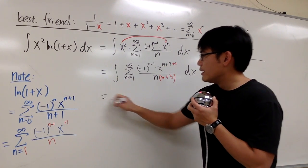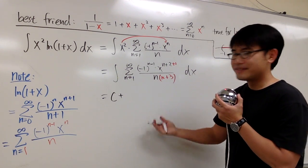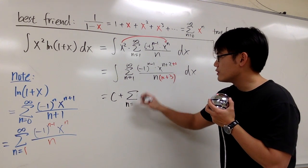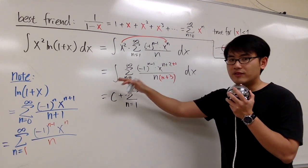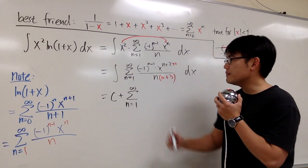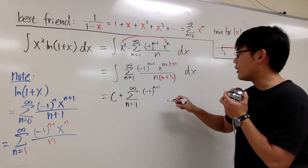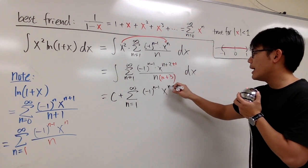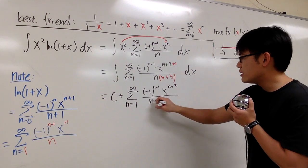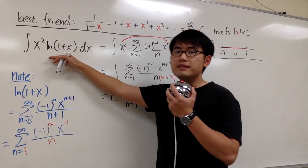Remember we always have the plus c whenever we do integrals. The result of this integral, we will have sigma when n goes from 1 to infinity. And whenever we integrate, we don't lose the term, so we still start with 1. And then this is negative 1 to the n minus 1 power, and then here we have x to the n plus 3 power over, on the denominator, n times n plus 3. And this right here will be the result for this integral.